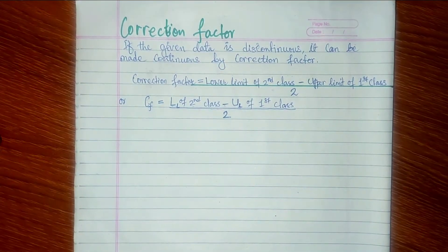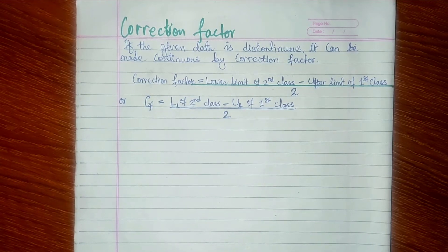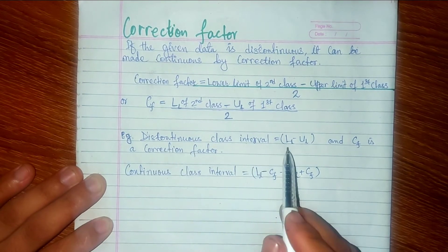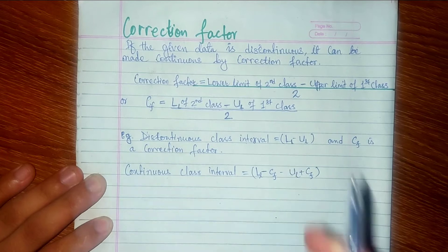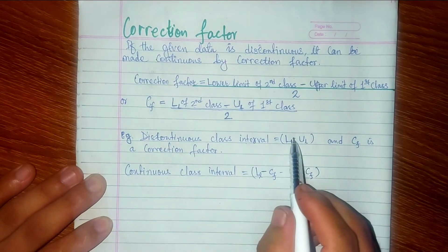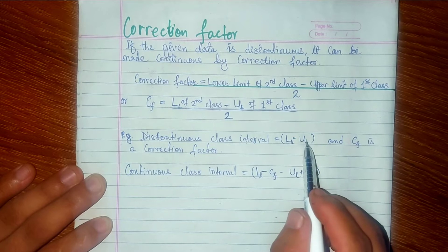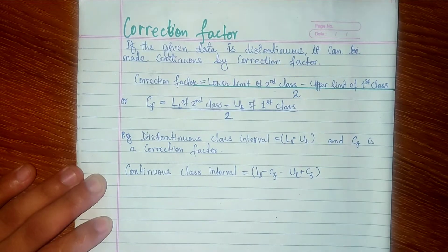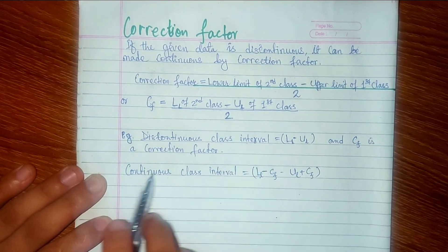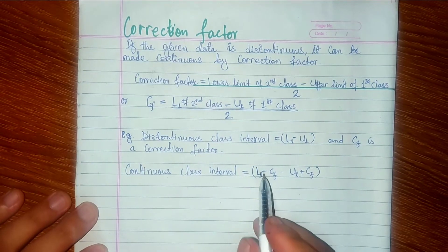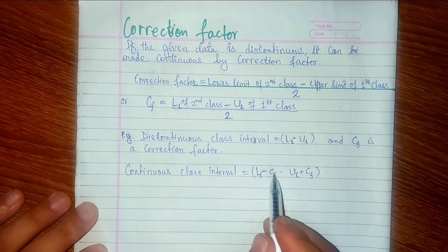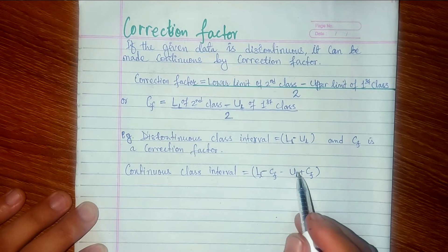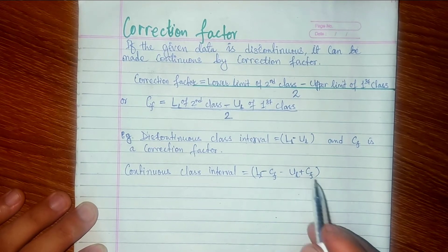For example, suppose we have discontinuous class intervals. The correction factor is CF. To convert discontinuous intervals to continuous intervals: from the lower limit, subtract the correction factor, and to the upper limit, add the correction factor.